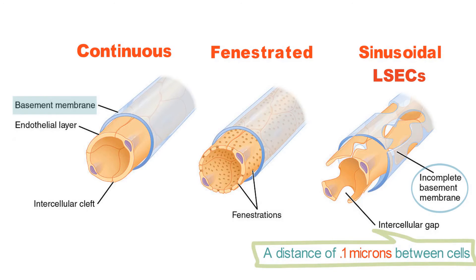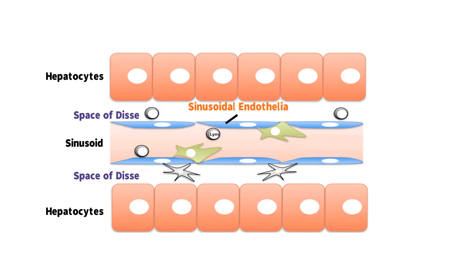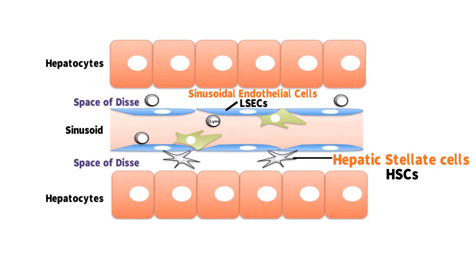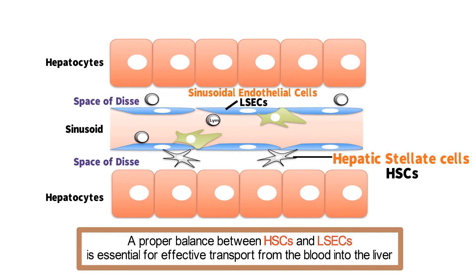The thin, single layer of cells making up the sinusoids and their fenestrated nature allow for maximum transport of biomolecules out of the blood and into the liver. Once absorbed from the blood, biomolecules enter the space of Disse and are able to come into contact with hepatocytes for further hepatic processing. On the other side of the space of Disse, near the LSECs, are the hepatic stellate cells, or HSCs. HSCs maintain healthy LSECs and hepatocytes through their secretions of chemical messengers, and a proper balance between HSCs and LSECs is essential for effective transport from the blood into the liver.